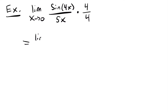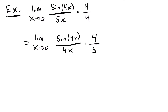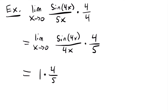Now I can rearrange terms, since it doesn't matter the order of multiplication in the denominator. I can move things around to rewrite this as the limit as x approaches 0 of sine 4x over 4x, times 4/5. We can verify: 4 times 5x is 20x, and 4x times 5 is also 20x — the denominator is unchanged. Since sine 4x over 4x matches our special form, that equals 1, giving us 1 times 4/5, which equals 4/5.